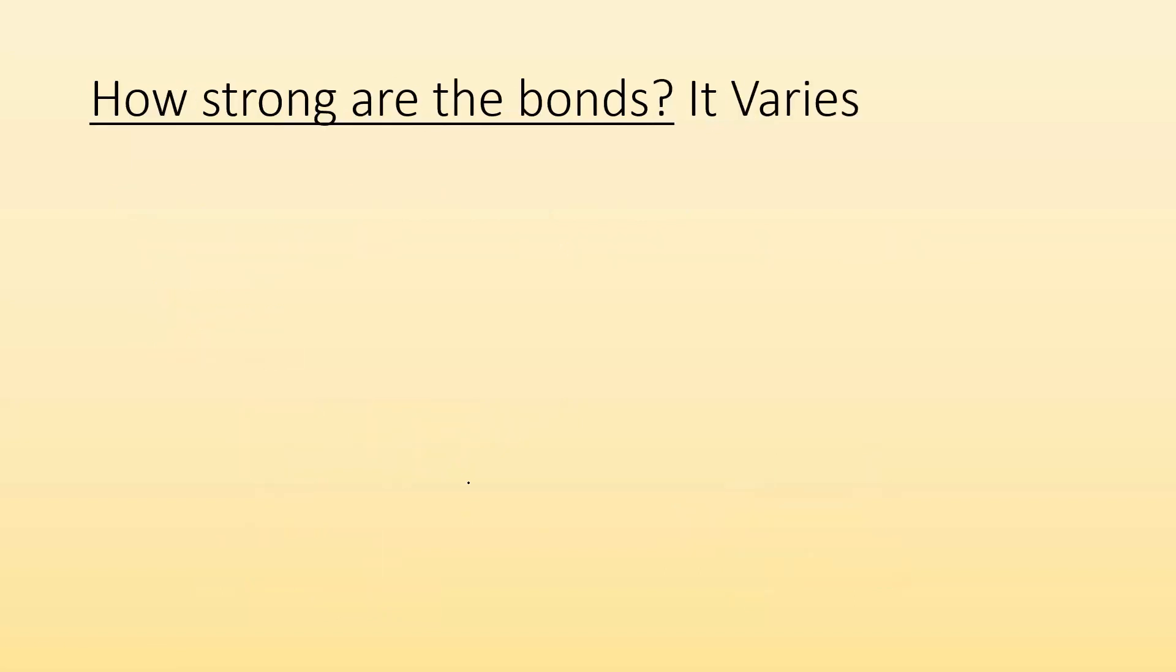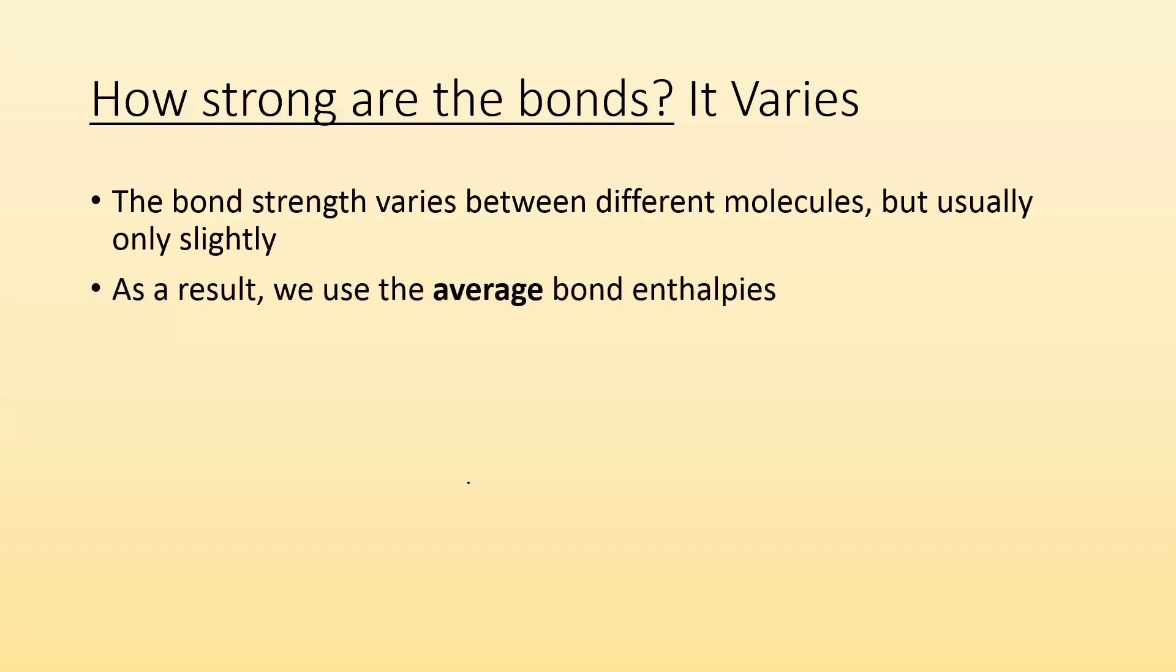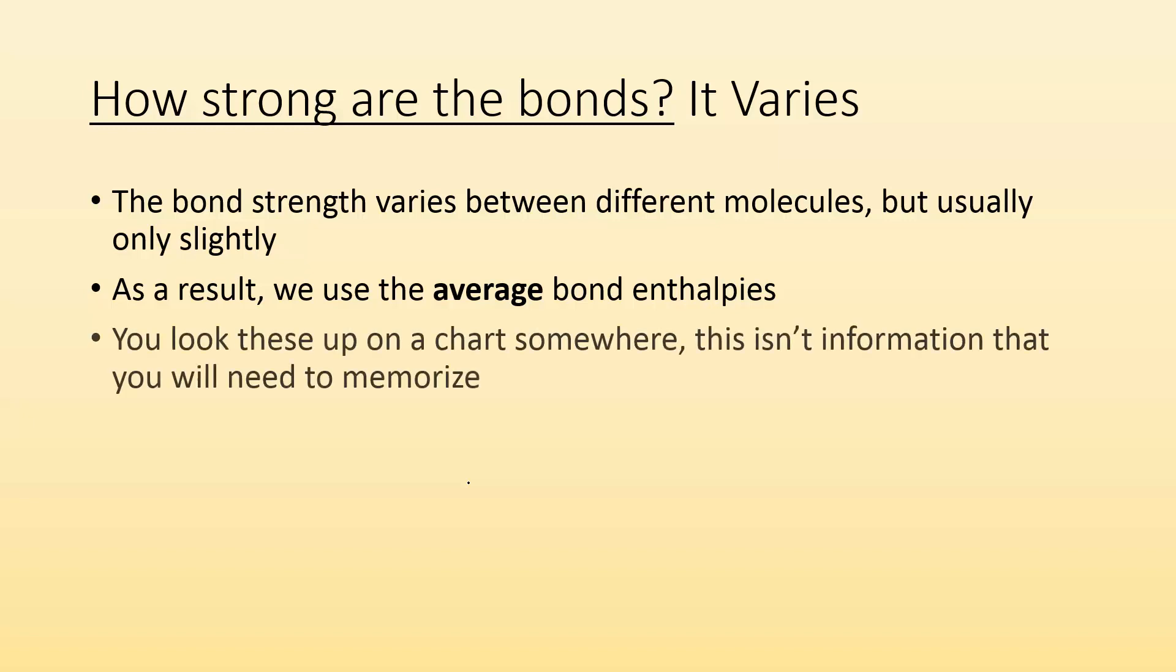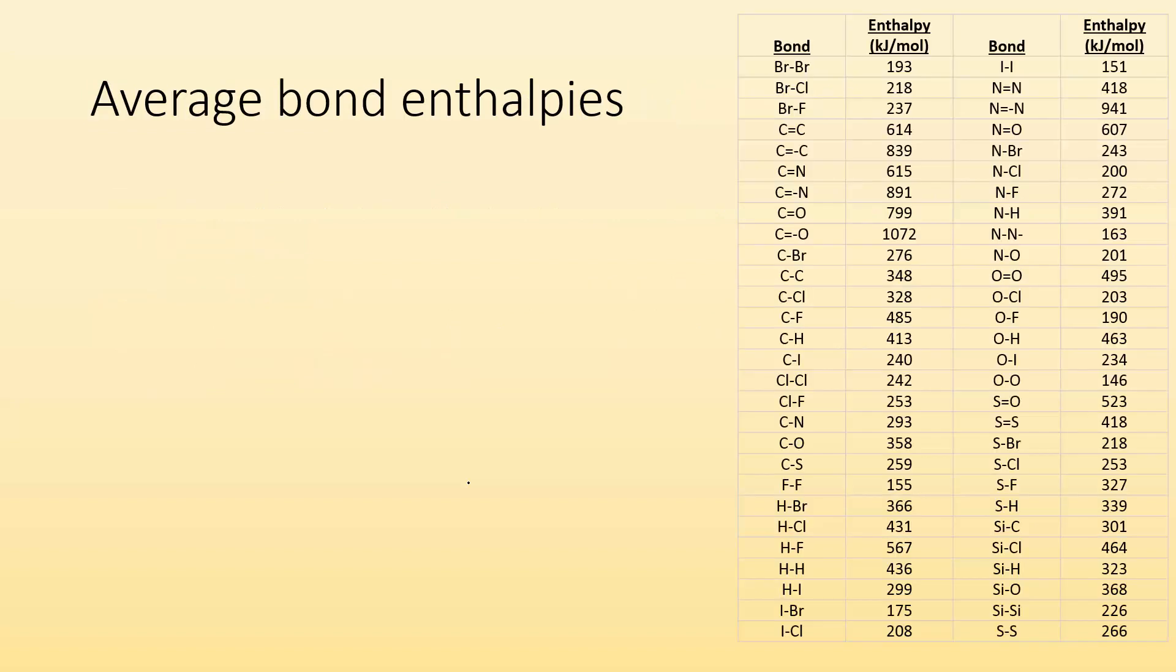So short answer to how strong are the bonds? Well, it varies. So the bond strength varies between different molecules, but it's usually only a slight difference. As a result, we use average bond enthalpies. Whenever we're doing the work and we're talking about quantifying this with numbers, we use an average bond enthalpy. This is just something that you're going to look up in a chart somewhere. This isn't information that you need to memorize at all. It's going to look like this. You have what kind of bond you're talking about in one column, and then you have the average bond enthalpies in another column. And you just look up which ones you're interested in. It's found on the chart. That's it. You don't got to memorize any of this.